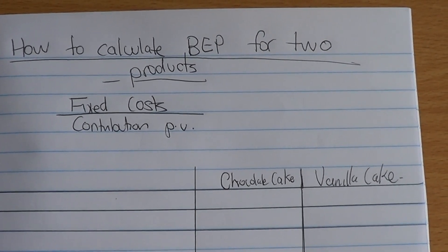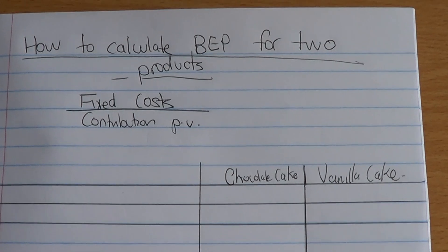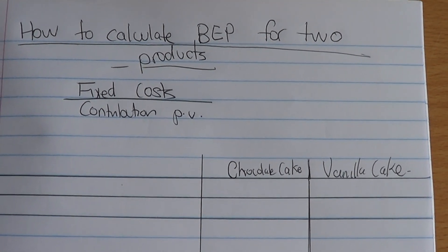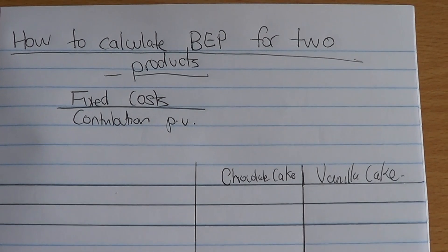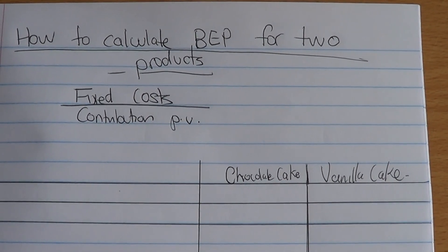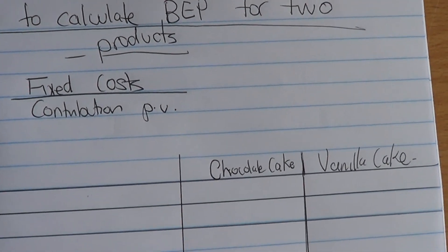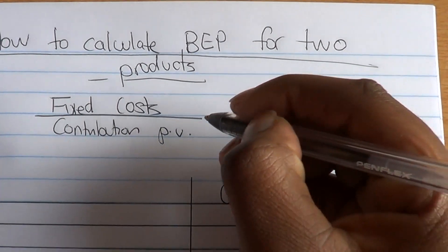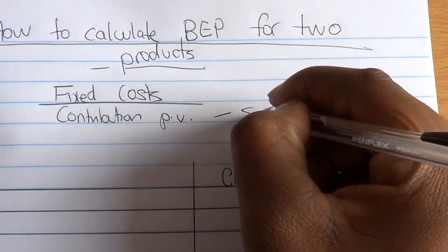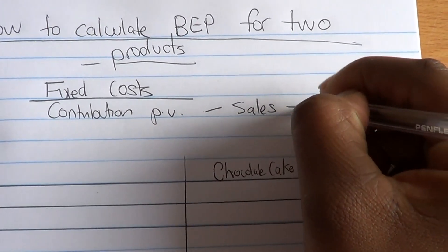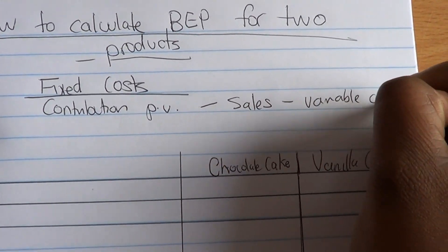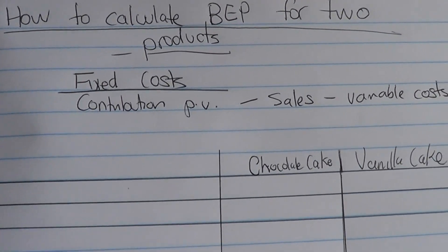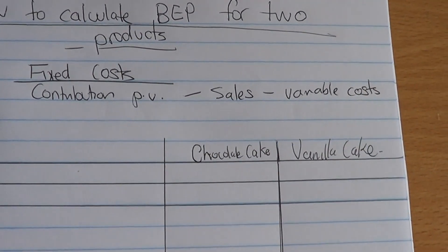I like to use contribution per unit. I know there's an option to use contribution percentage, but I like to use contribution per unit because I know that's going to get me break-even point in units. It's obviously important to remember that contribution is sales or turnover, less variable costs.